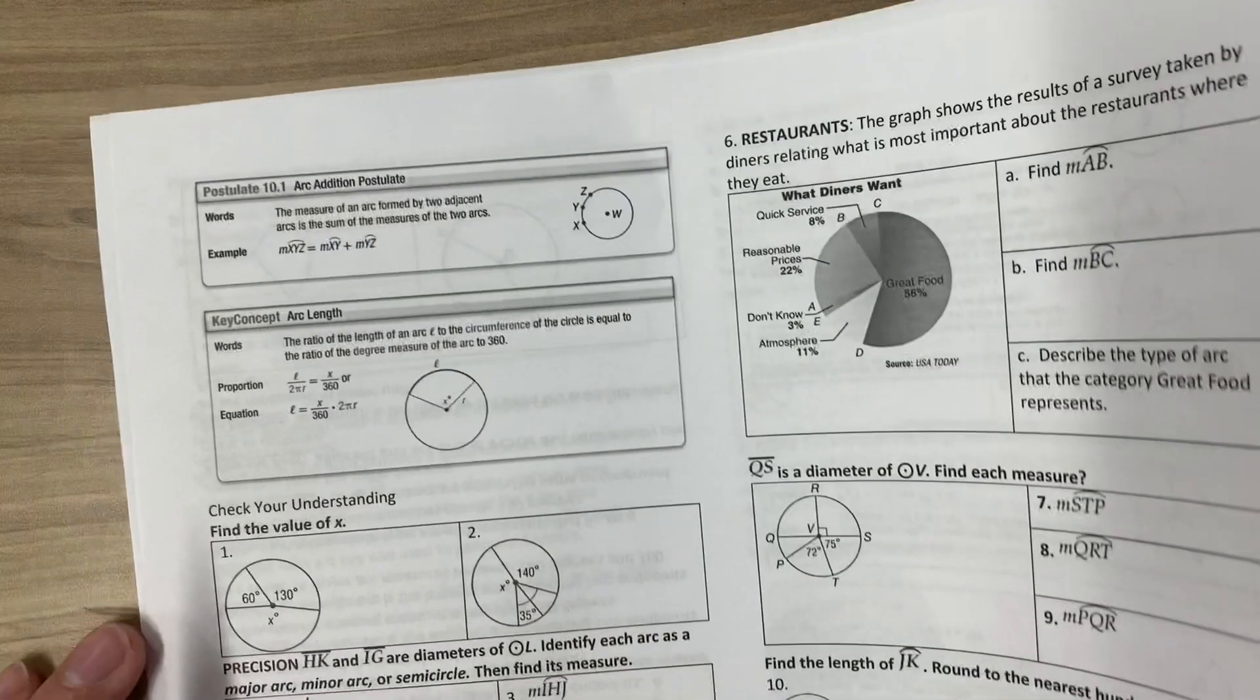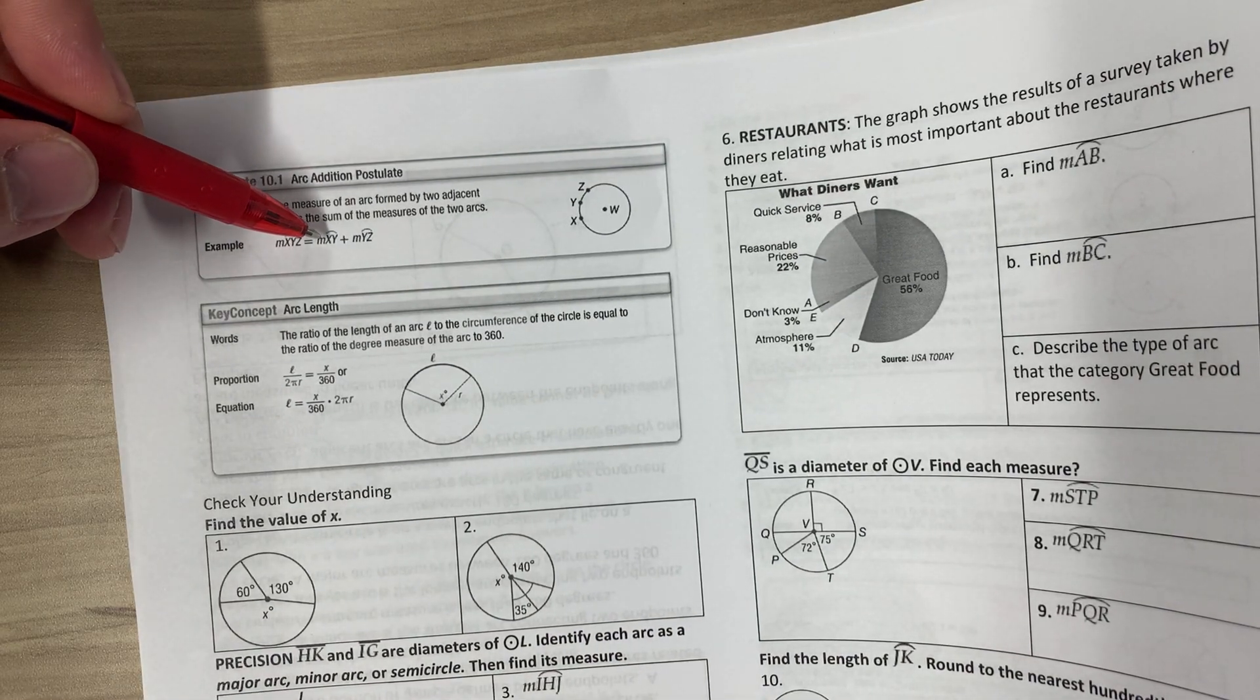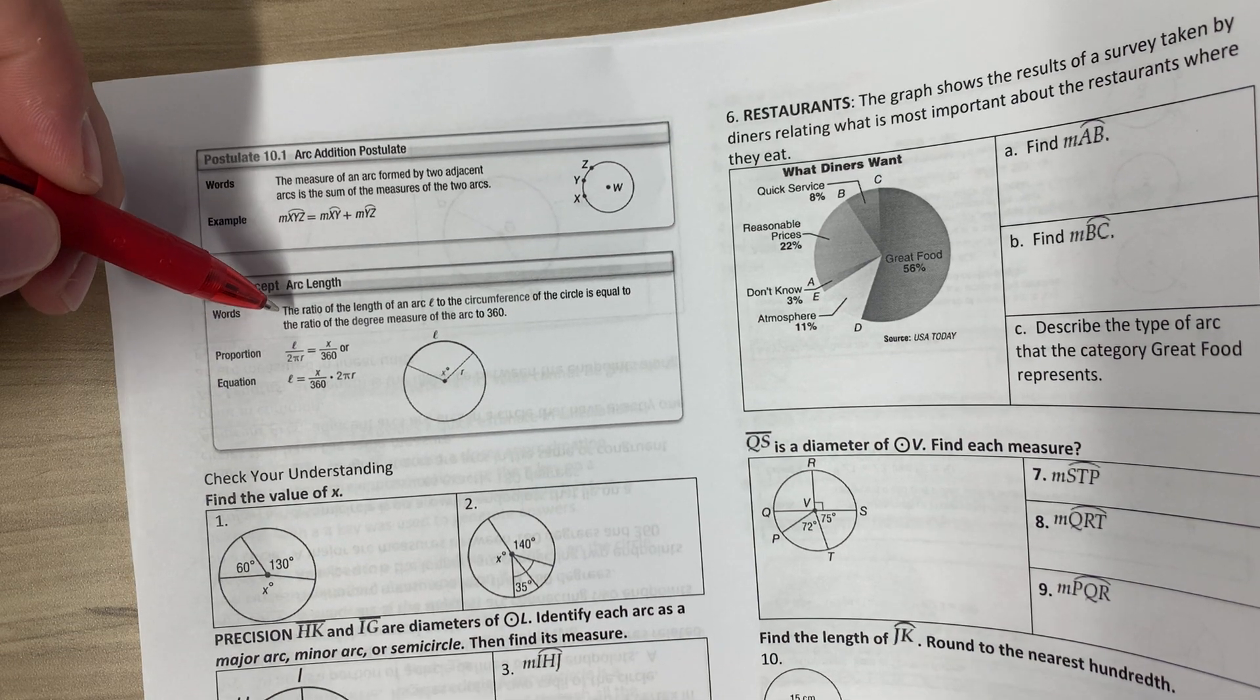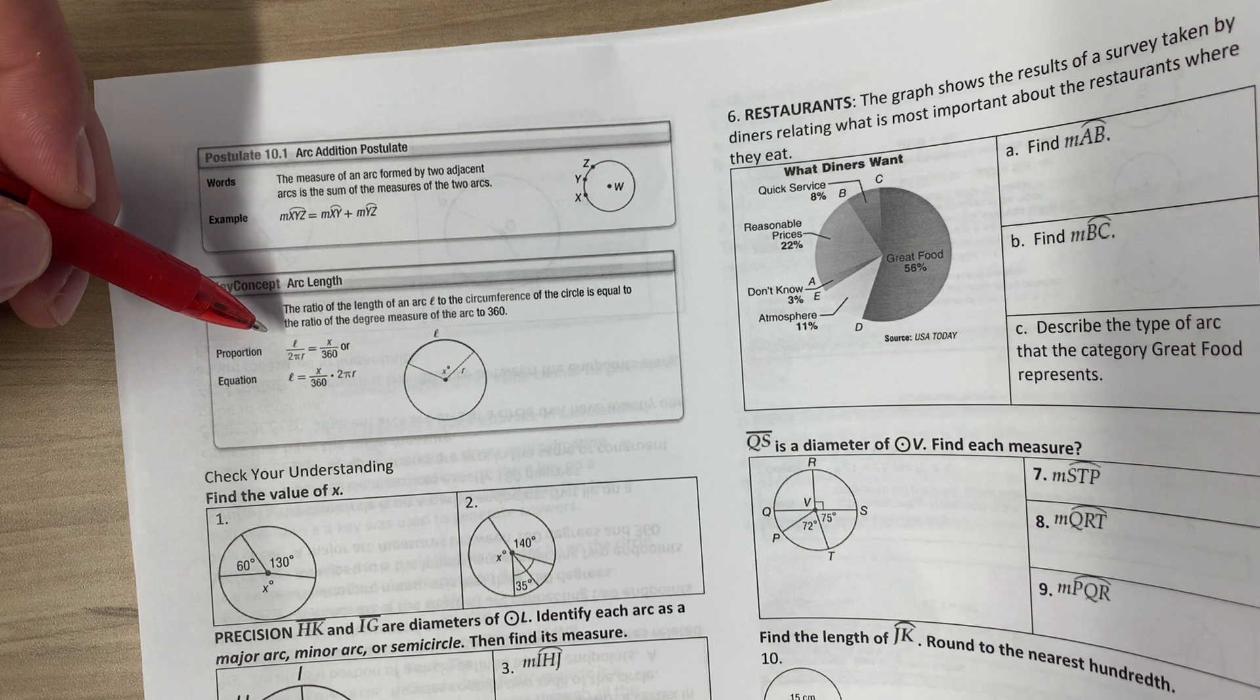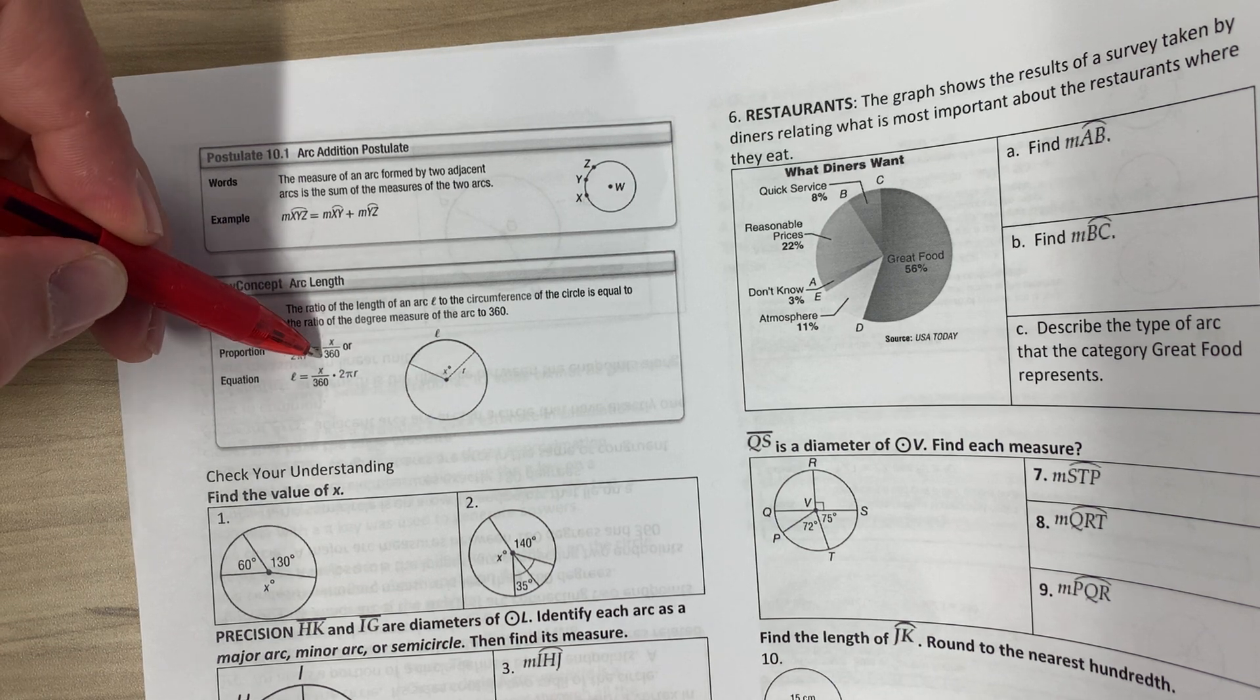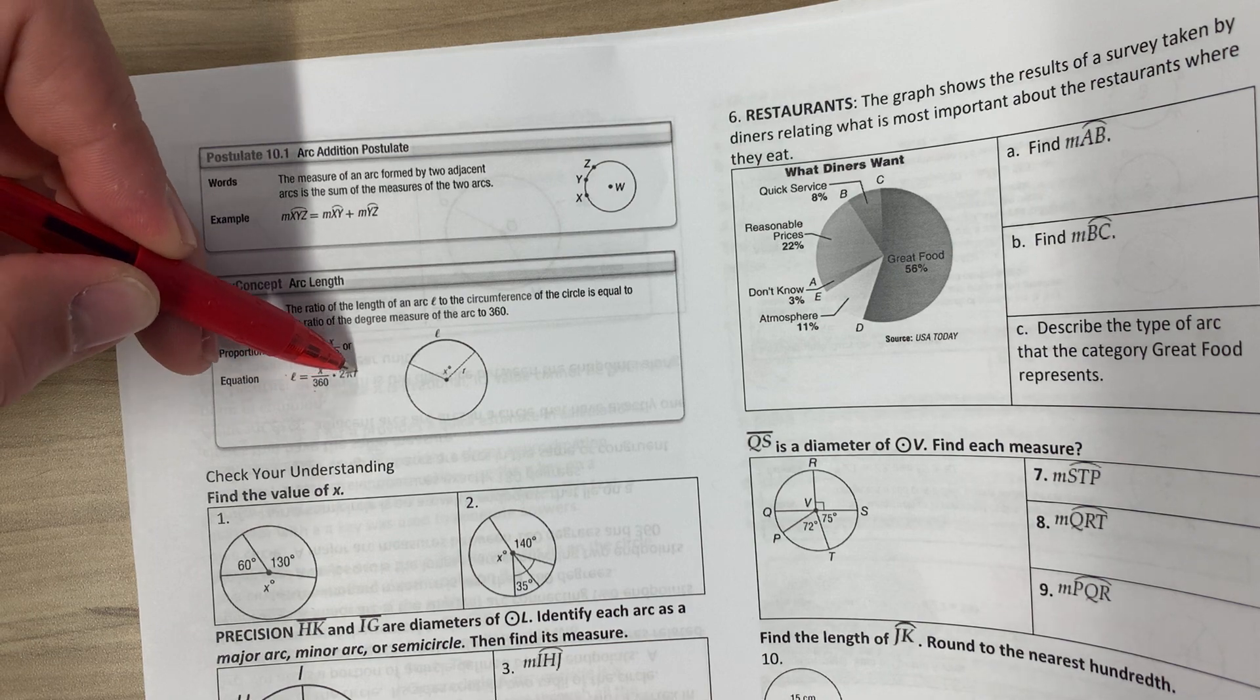The arc addition postulate: arc XYZ is equal to arc XY plus arc YZ. Arc length: the ratio of the length of an arc L to the circumference of the circle is equal to the ratio of the degree measure of the arc to 360. So L over 2πR will equal X over 360, or L will equal X over 360 times 2πR.